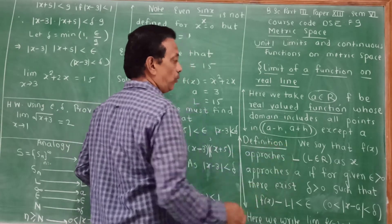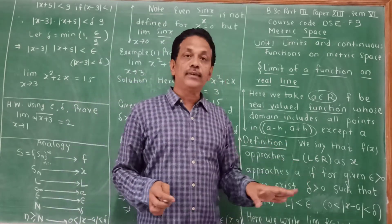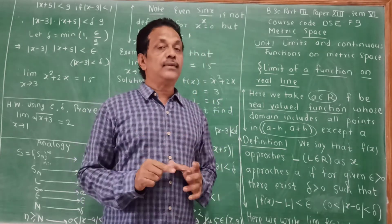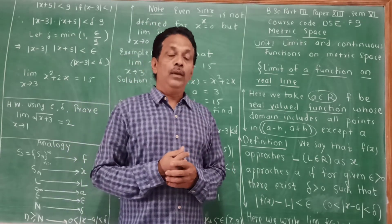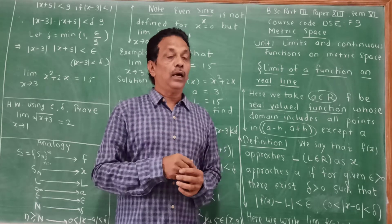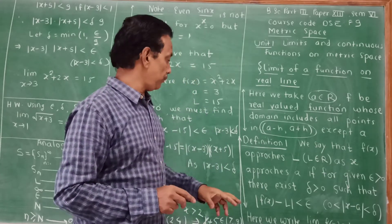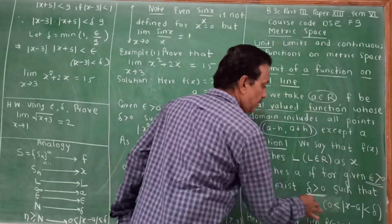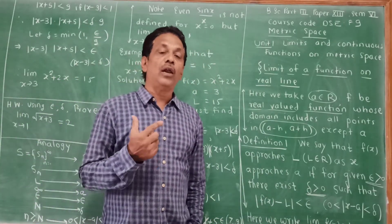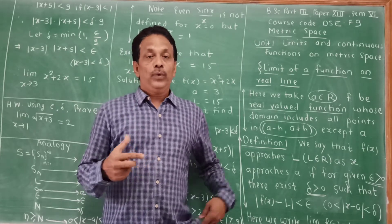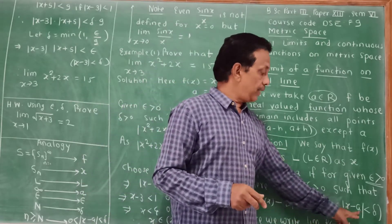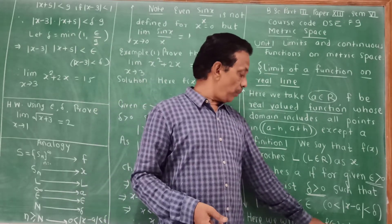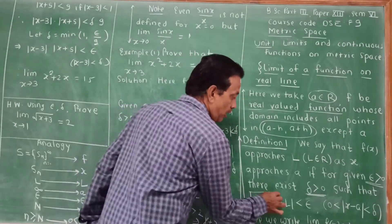Definition 1: We say that f(x) approaches L as x approaches a. This is the epsilon-delta definition. We have seen from 11th standard what is the limit of a function. Here our emphasis is on epsilon and delta. f(x) approaches L as x approaches a if, for a given epsilon greater than 0, there exists delta greater than 0 — epsilon and delta being very small numbers — such that f(x) and L are very close to each other. That is, as x approaches a, f(x) approaches L. In other words, the limit of f(x) as x tends to a is equal to L.